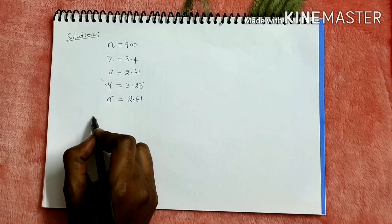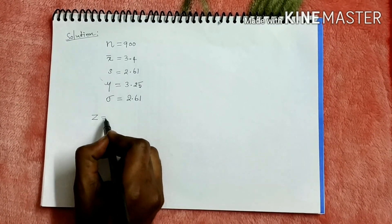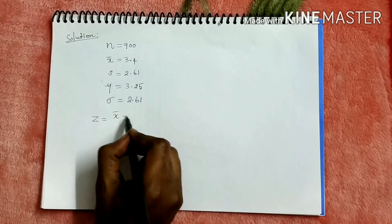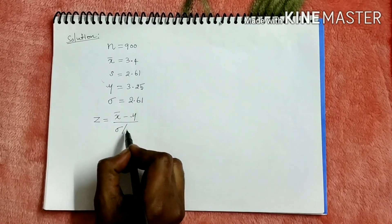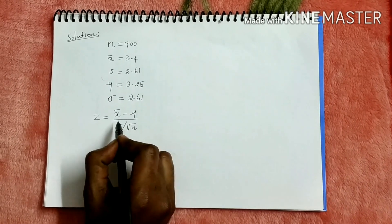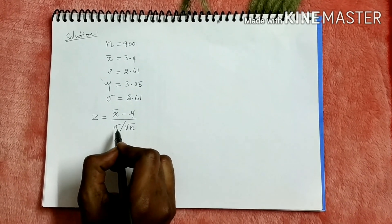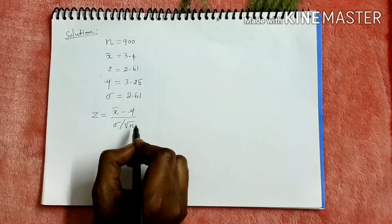The Z test formula is x bar minus mu by sigma by root n. This is the formula for Z test for single mean.